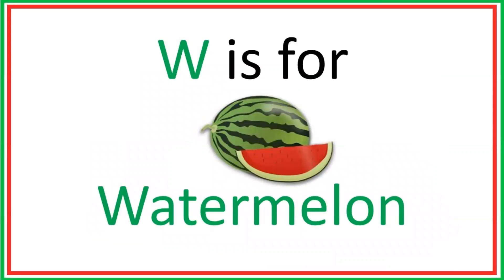W. Can you guess what's this? We eat it in summers and it's a fruit. It's green from the outside and red from the inside. What is it? Correct! It's a watermelon. W for watermelon.